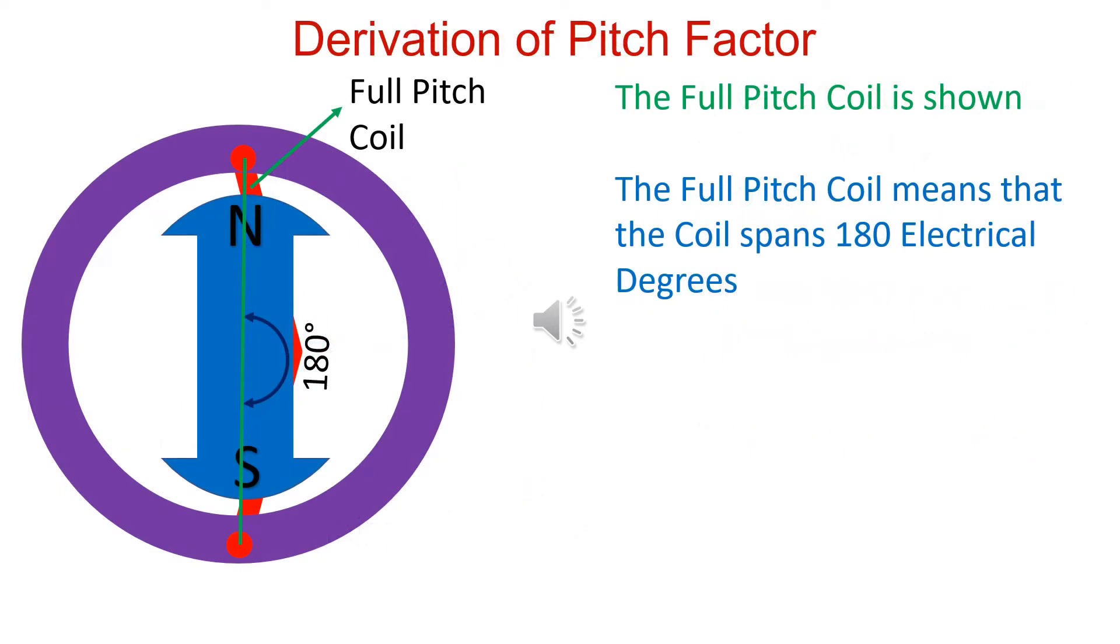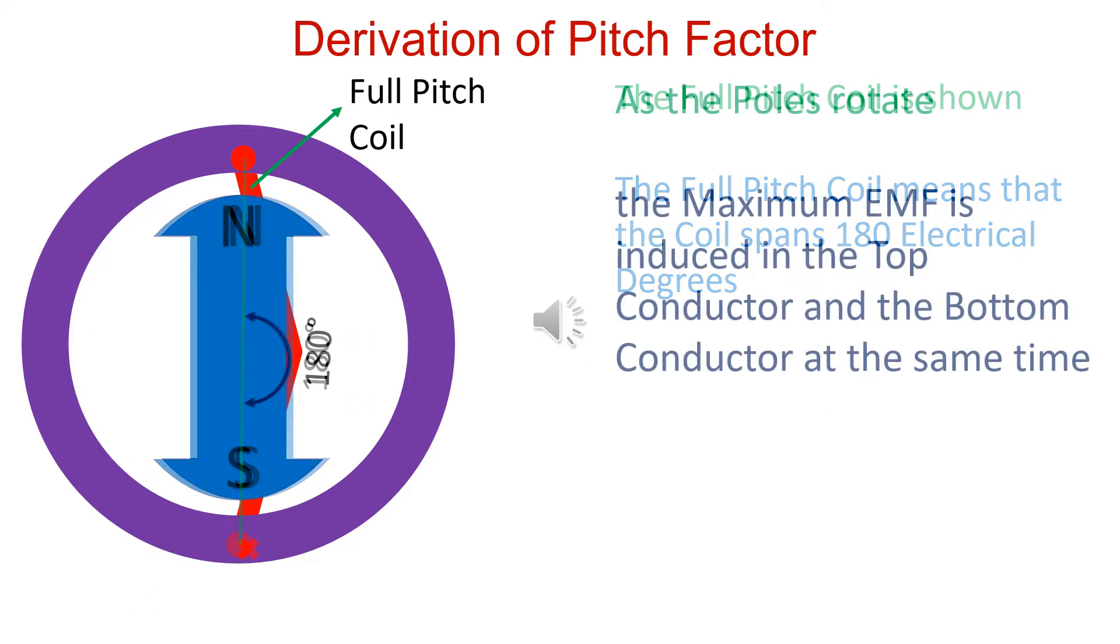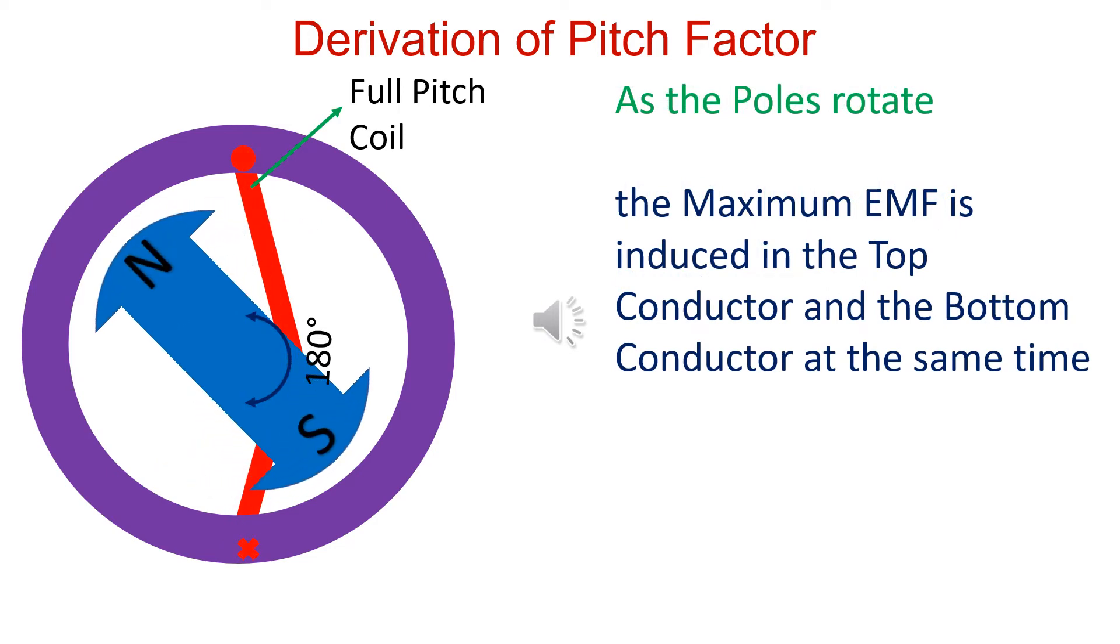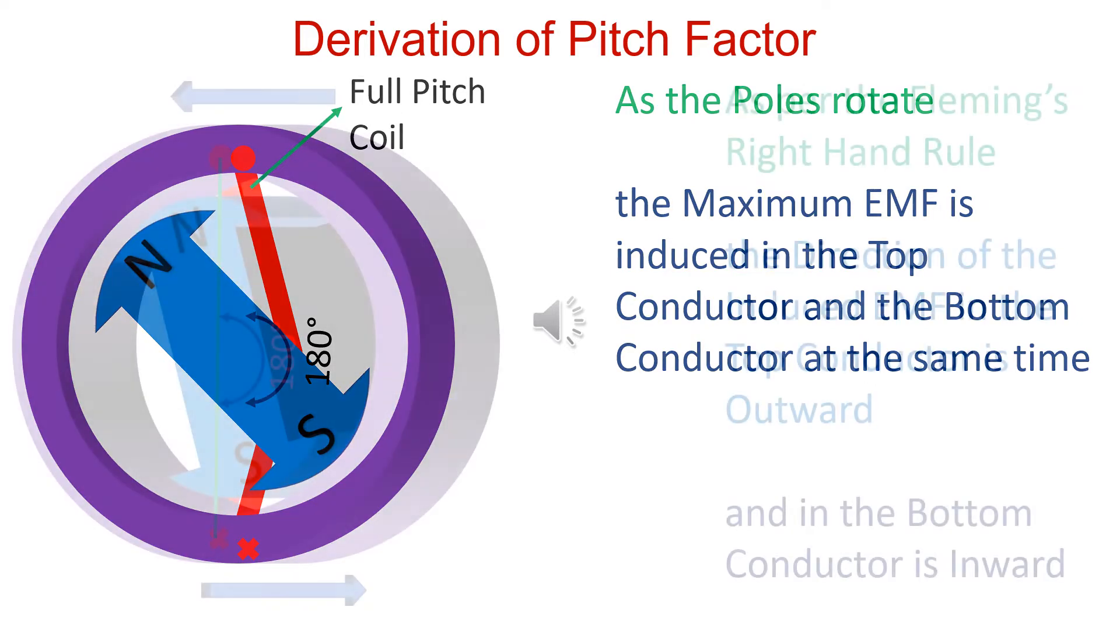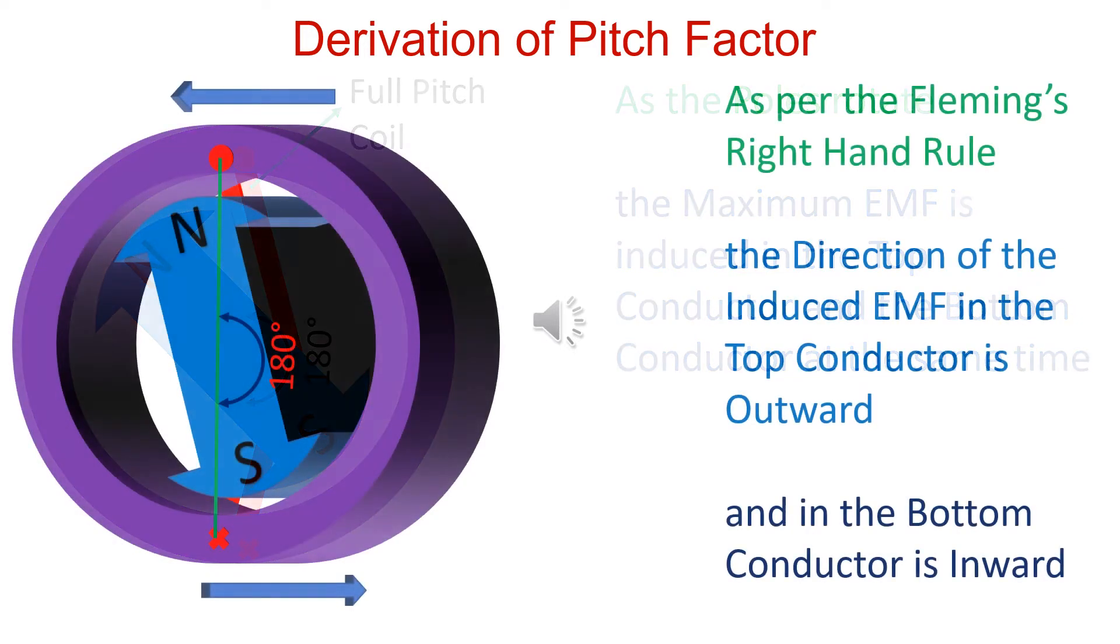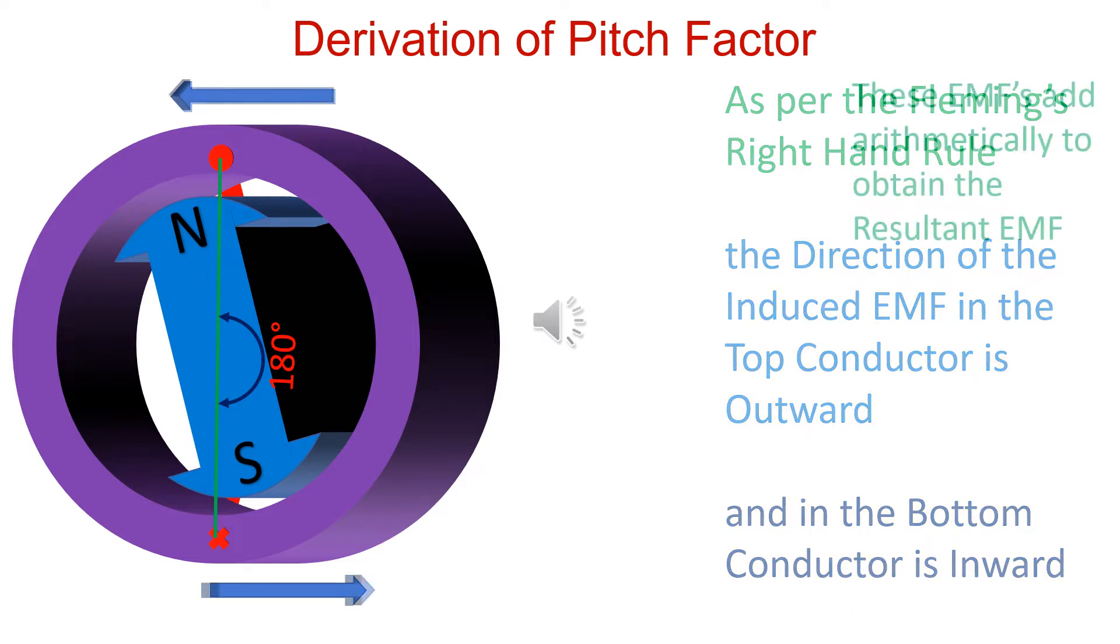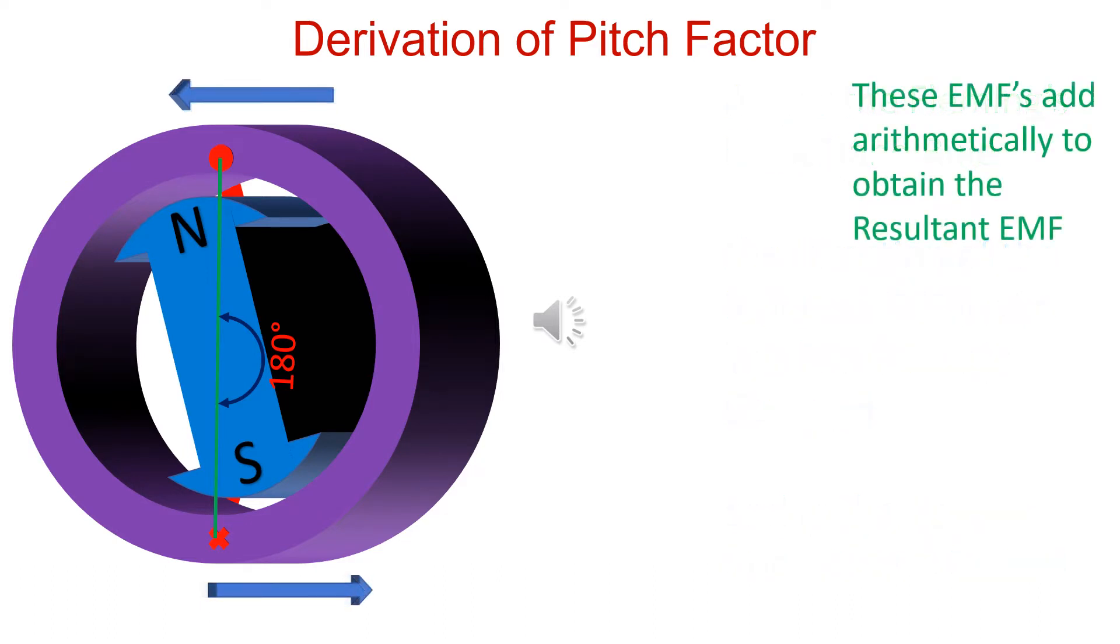In full pitch coil, coil span is 180 electrical degrees. EMF is induced in both coil sides at the same time. The direction of induced EMF is found by applying Fleming's right-hand rule. Resultant EMF is found by arithmetic addition.